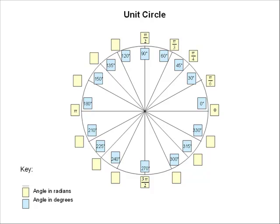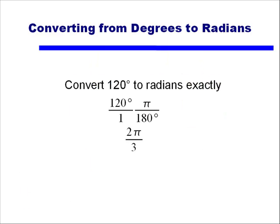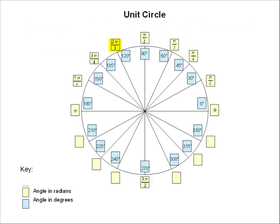Now we have to look at the other quadrants. Taking 120 degrees — if I convert it to radians by multiplying by pi over 180, that simplifies to 2 pi over 3. Similarly, 135 degrees converts to 3 pi over 4, and 150 degrees converts to 5 pi over 6. The third quadrant works exactly the same way: multiplying by pi over 180, we find the angles 7 pi over 6, 5 pi over 4, and 4 pi over 3. Doing the same for the fourth quadrant leaves us with 5 pi over 3, 7 pi over 4, and 11 pi over 6.